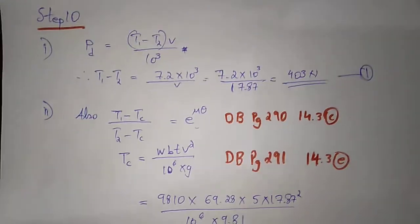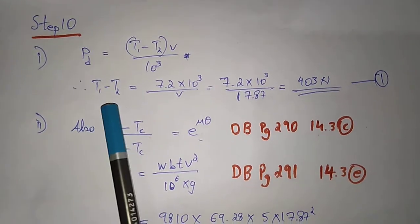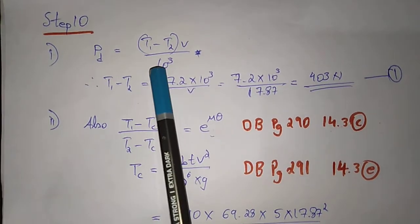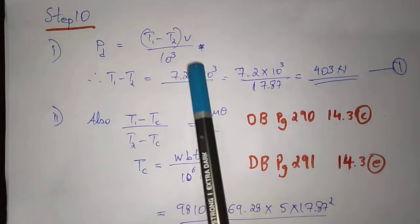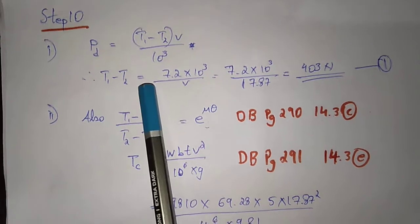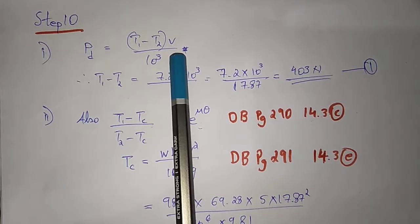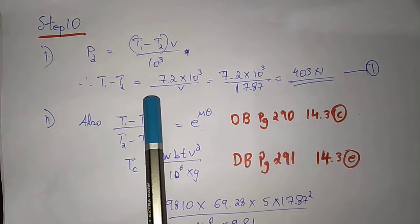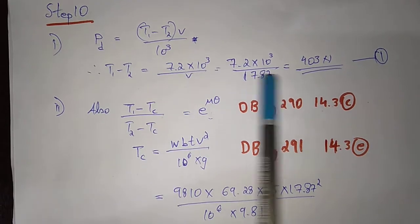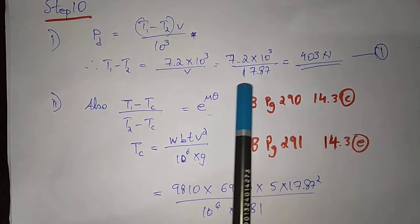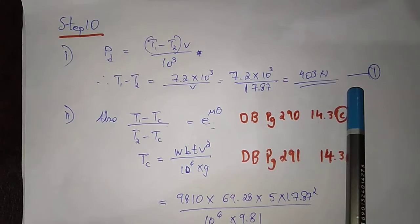Step 10: Design power PD. We use T1 minus T2 into V divided by 1000. Rearranging: T1 minus T2 equals PD into 10 power 3 divided by velocity. So T1 minus T2 = 7.2 × 1000 divided by 17.87, which equals 403 N. This is equation number 1.